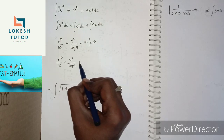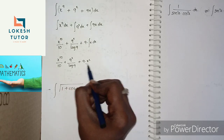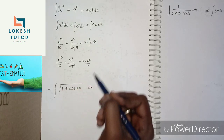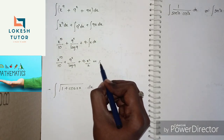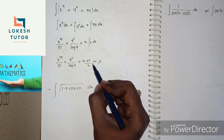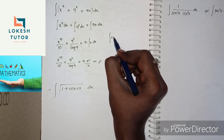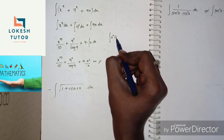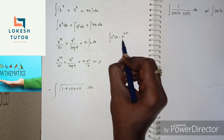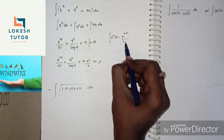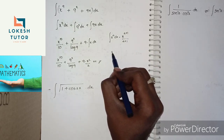For the third term, 9x: we take out the constant 9, and integral of x dx = x²/2. So the final answer is x¹⁰/10 + 9ˣ/log 9 + 9·(x²/2) + C. Formulas used: integral xⁿ dx = x^(n+1)/(n+1), and integral aˣ dx = aˣ/log a.